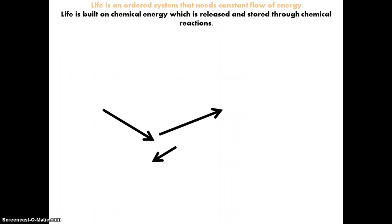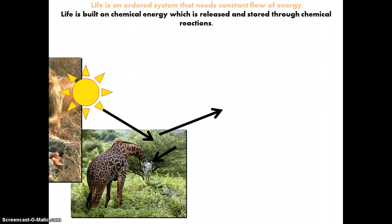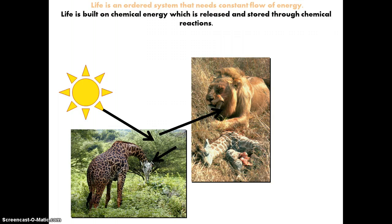Life is an ordered system that needs constant flow of energy. So life is built on that chemical energy, which is released and stored through chemical reactions. Our ultimate source of energy is, of course, the sun. And that sunlight is harnessed and converted to chemical energy by taking carbon dioxide and water and converting that to chemical energy in terms of food. And that process is, of course, photosynthesis. And then, as you can see, that giraffe is consuming that chemical energy and converting that. So this energy flows throughout the ecosystem.